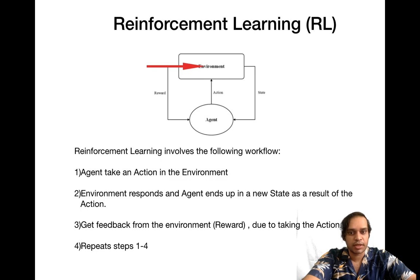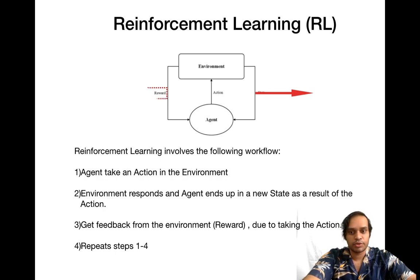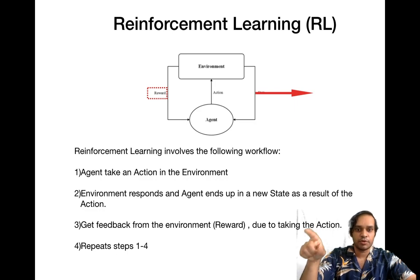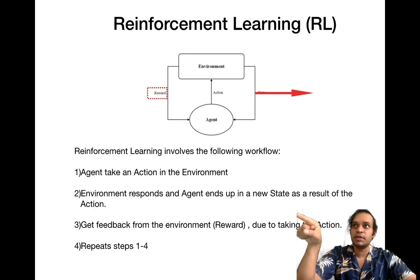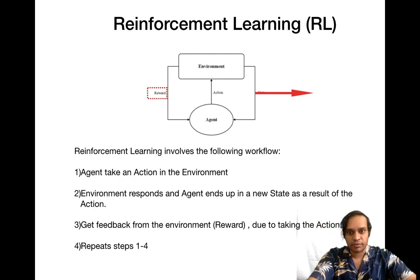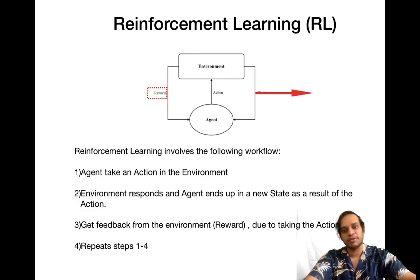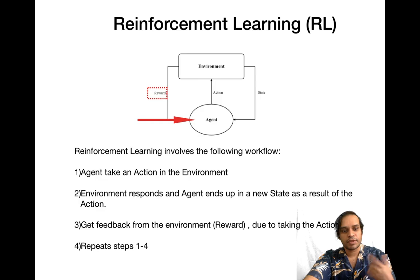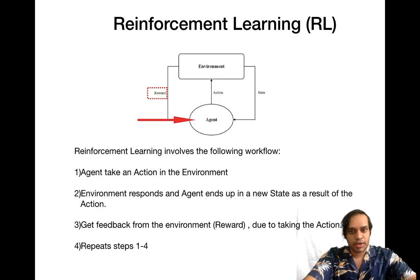We get a response from the environment which takes our drone to a new state, and from the new state we also get a reward for taking a particular action. For example, think of me as the artificial intelligence: if I go into a dark room and turn on the light — which is the action — the response from the environment is to make the room bright. I end up in a new state, and my reward is that I can see more. That is the general paradigm of reinforcement learning: an agent takes an action in an environment, gets a response and a reward, and the cycle keeps repeating.